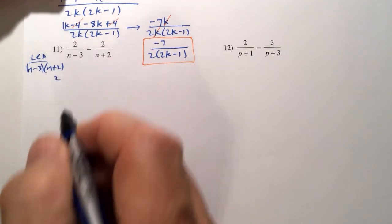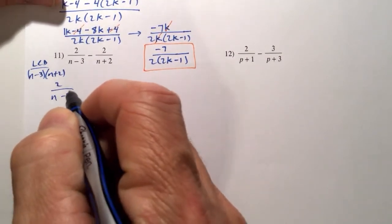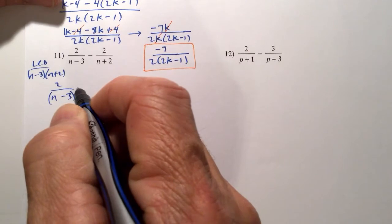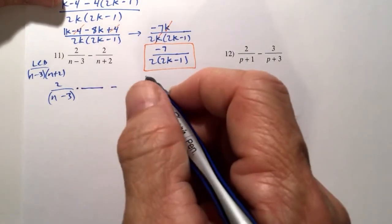So we're going to rewrite the first fraction. We're going to leave a little space. We're going to be strategic about this. And we have a minus sign there.